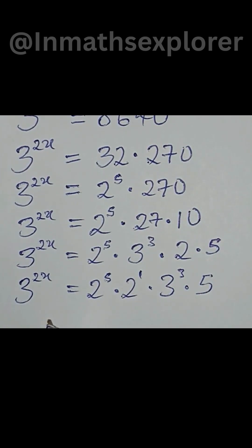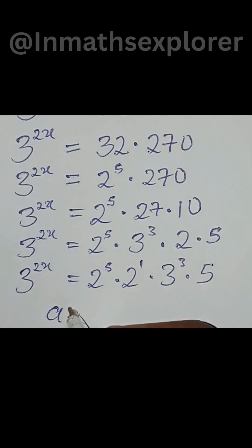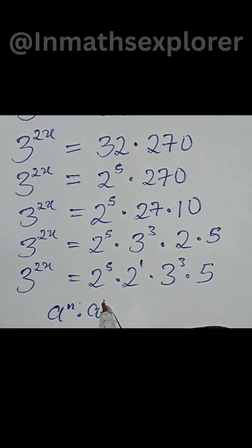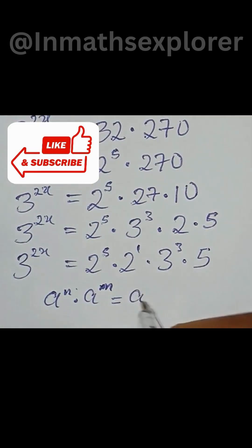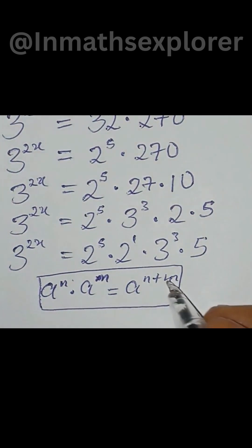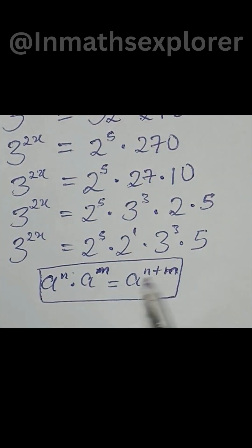Considering our exponential identity: if you have a to the power of n multiplied by a to the power of m, you can write it as a to the power of n plus m, adding the exponents.